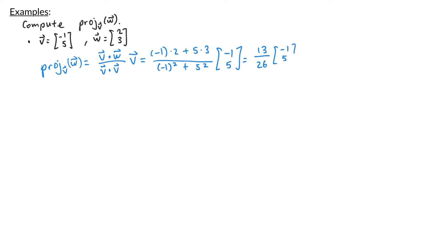Simplifying, we get 13 over 26, which is 1 half, times negative 1, 5. Multiplying this scalar into the vector, we get negative 1 half and 5 halves. So that's the projection of w onto v.